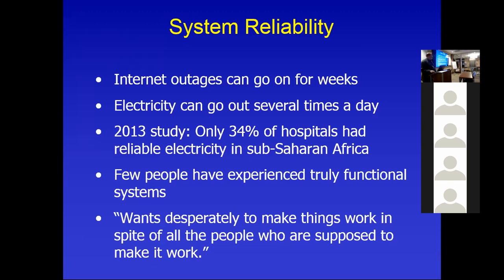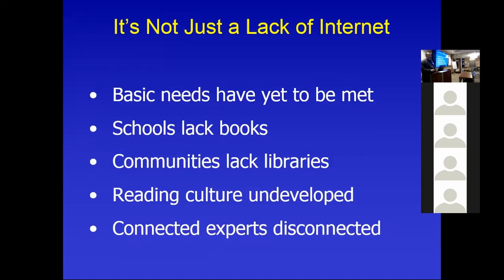The conditions that people live under there are significantly different than what we experience here. Very few people have really experienced a truly functional system. Villanova probably spends $100 million or more a year on ITS and all that infrastructure. There are whole countries that wish they had $100 million for all of their universities for everything. Even people who are trying to make things work talk about how just hard it is — the electrical company doesn't deliver electricity, the internet company doesn't deliver internet.